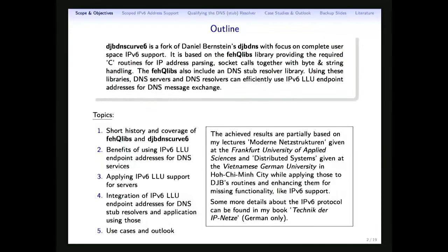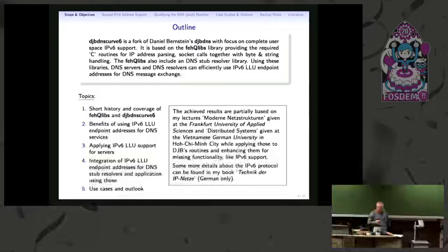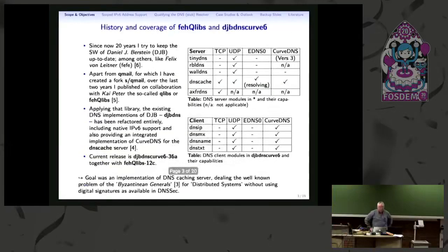What I cover in this talk is a bit of the history of DJB DNS curve 6, my software library QLibs, and ideas around using IPv6 addresses — in particular IPv6 link-local unicast addresses — for DNS services, applying those to servers and clients, and some use cases for why it is beneficial. DNS seems to be something for the old guard, but let's see what we can do about that.